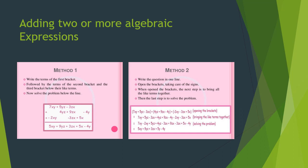The second method is the column method. Write the expressions one below the other so that the like terms fall in the same column, then add the terms in each column. So: 7xy plus 5yz minus 3zx; below that 4yz below the yz term, plus 9zx below the zx term, minus 4y separate; and minus 2xy below the xy term, minus 3zx below the zx term, plus 5x separate. Adding all, we get 5xy plus 9yz plus 3zx plus 5x minus 4y.